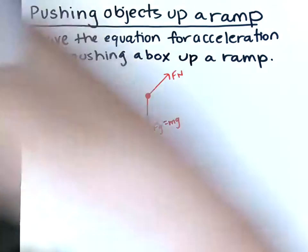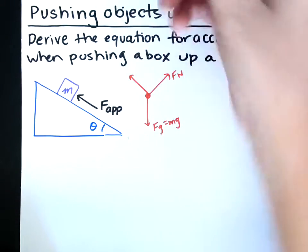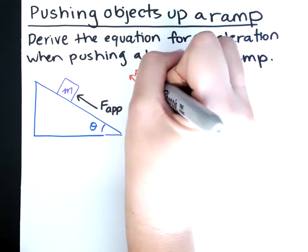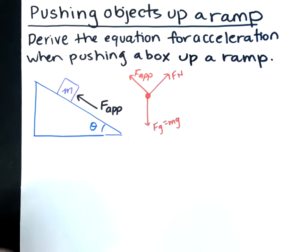And we're pushing it up the ramp, so we have that applied force, f applied. And since it's moving upward on the ramp, our frictional force is downward on the ramp. Friction always opposes motion.